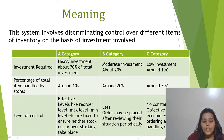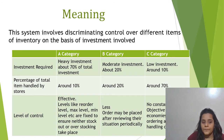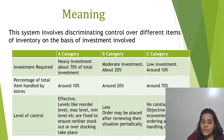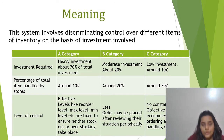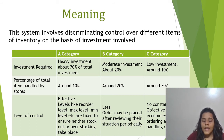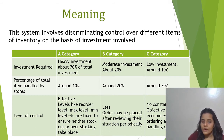So this system of inventory involves discriminating control over different items on the basis of the investment involved. Category A are those items which require heavy investments, about 70% of the total investment. Because a lot of money is involved in these inventories, the level of control is going to be really effective. The reorder level, maximum level, minimum level — all these controls will be put in place to ensure that overstocking and understocking situations are avoided.